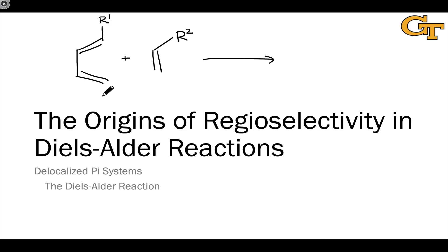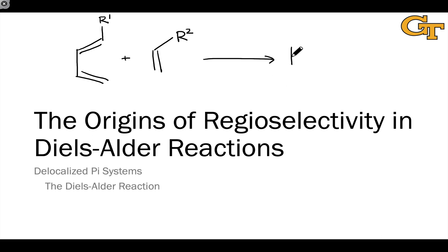Most synthetically useful Diels-Alder reactions involve the combination of substituted dienes and dienophiles, and these are also more rapid than the parent Diels-Alder reaction with just H's. One of the important issues concerns the connectivity of the product and the site selectivity or regioselectivity of the reaction. For example, when we combine a diene with an R1 group linked to one of the end carbons with a dienophile with an R2 group on the alkene, we can end up with two possible isomeric products — constitutional isomers, commonly called regioisomers.